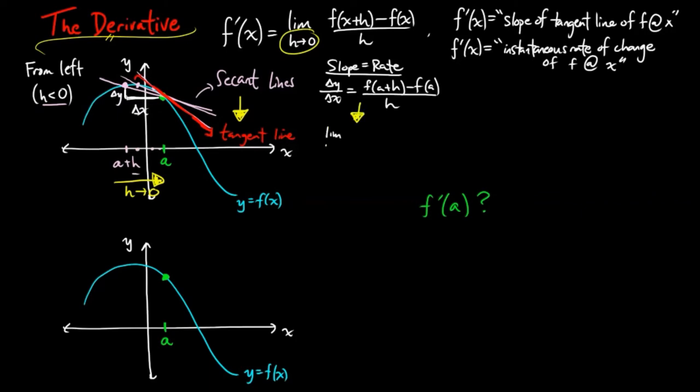Then the slope of the tangent line is the limit of these difference quotients. And by definition, this should be f'(a).